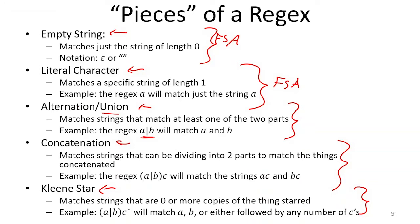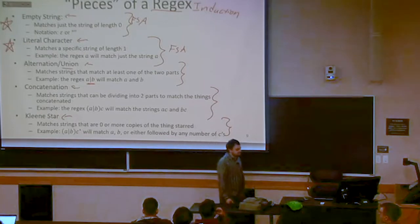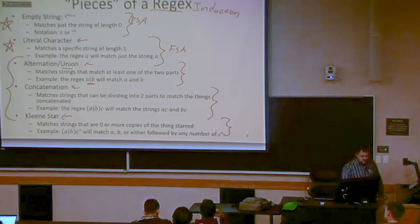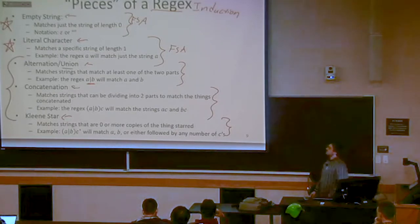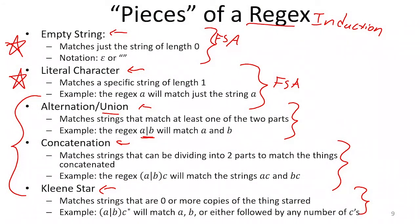This proof technique is actually a special kind of proof by induction. Regular expressions are defined with base cases — empty string and literal character — which are the simplest regular expressions. Then there are rules for building more and more complex regular expressions from those simple pieces by combining them with alternation, concatenation, and Kleene star.